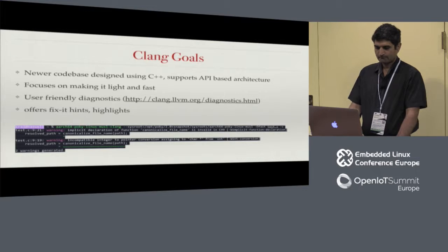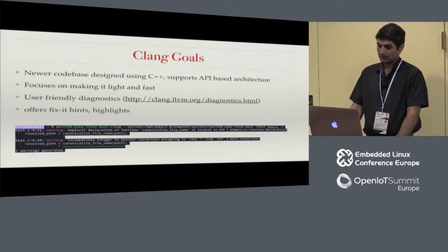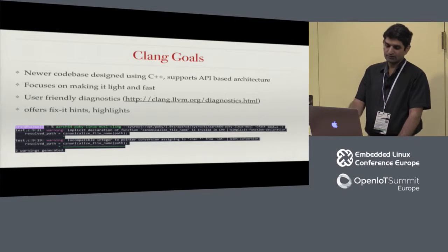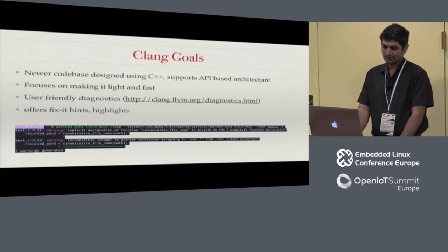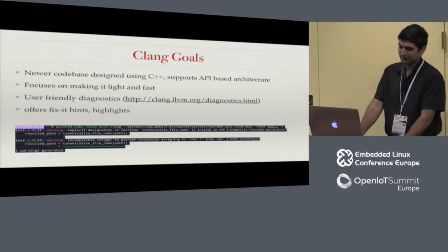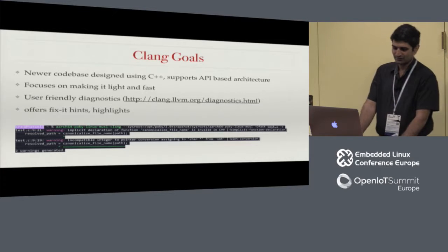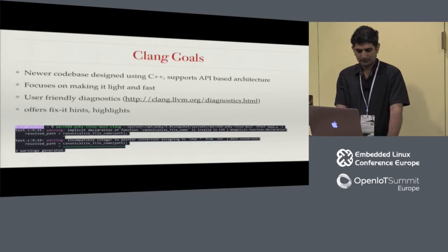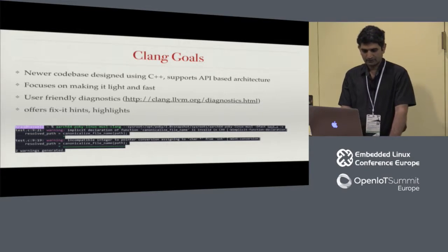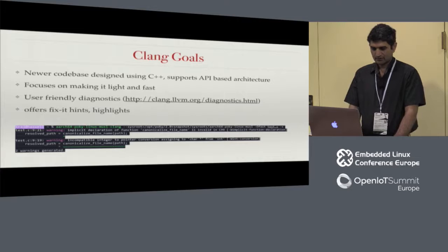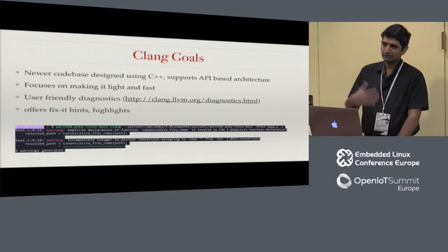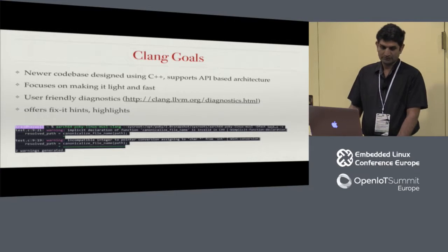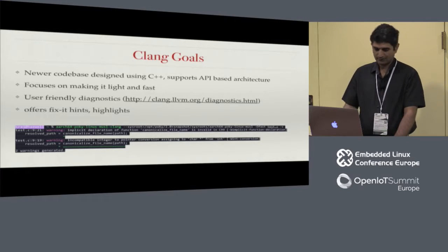User-friendly diagnostics is one of the goals — they always want to be very user-friendly. Many of you doing C++ know you can get very cryptic error messages sometimes. Clang tries to be very friendly and pinpoint error messages when you are compiling code. It also offers fix-it hints when it can, actually pointing you to what you could do to fix the code, which is pretty cool.